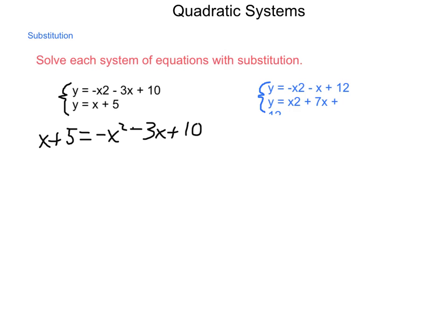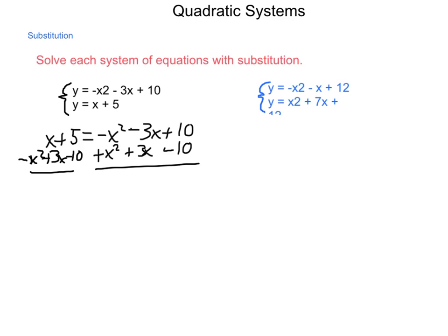And wanting to have a positive quadratic value, I'm going to add x squared, add 3x, and subtract 10 from each side of my functions. What this will do is make it so I have a quadratic that is set equal to 0. I will have x squared plus 4x minus 5 equal to 0.